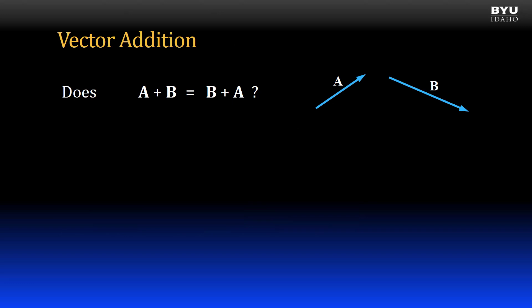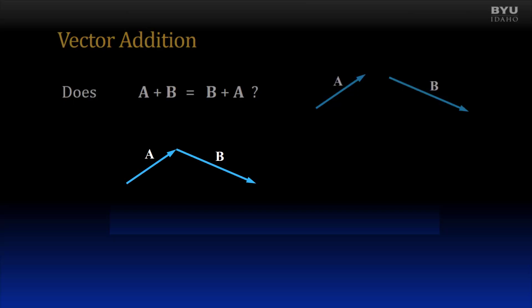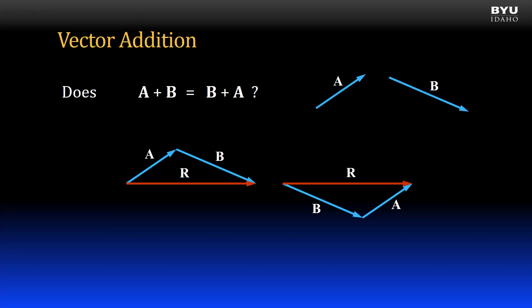First, with respect to vector addition, if I have two vectors A and B, does the order matter when I add them? So here's A plus B and here's B plus A using triangle construction. Look at the resultants for both configurations. We see that they are both the same length, meaning their magnitudes are equal. They are both pointed in the same direction, therefore the two resultant vectors are equal. The answer to our question is yes, vector addition is commutative.